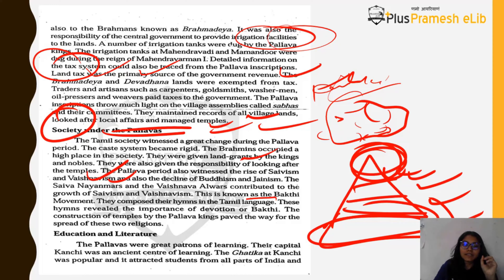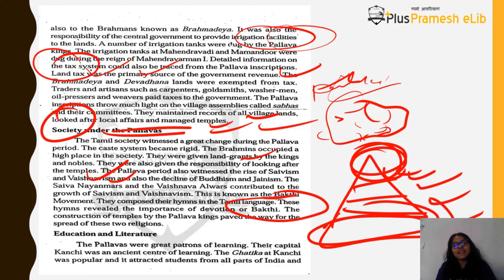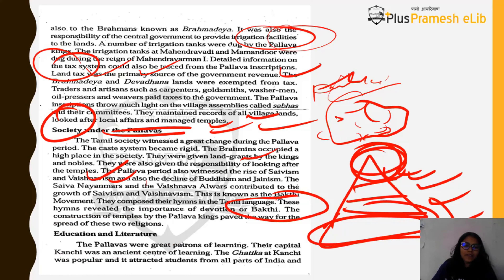The Nayanmars and Alvars composed their hymns in the Tamil language — similar to how the Rigveda had 1028 hymns in Sanskrit, these devotional hymns were in Tamil. The hymns focused on the importance of devotion and the benefits of following the Bhakti path. The construction of temples by Pallava kings paved the way for the spread of Shaivism and Vaishnavism.